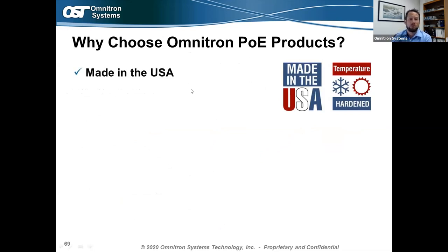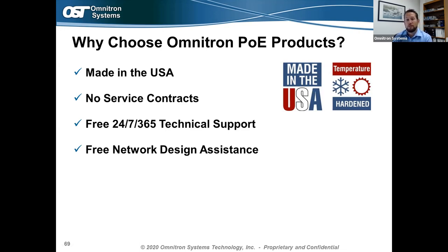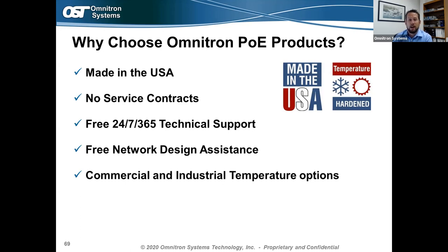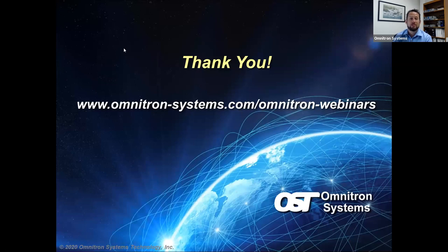Why choose an Omnitron PoE product? They're made in the USA — quality, reliable products made right here in California. No service contracts, no extended warranties needed — free 24/7 tech support is included, both pre-sale and post-sale. Free network design assistance: we can review your network diagrams and confirm whether a product will work in your network and recommend the most cost-effective solution. With various operating temperature ranges, fiber connection types, and support for all PoE standards, Omnitron offers a wide range of products — a one-stop shop for all your PoE needs with no minimum order quantities and no dropship fees.